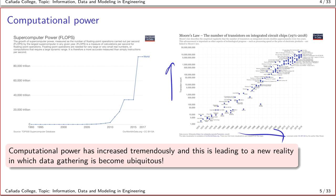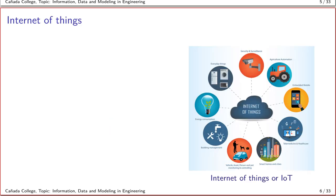The bottom line here is that computational power is increasing tremendously and this is leading to a new reality in which the ability to gather and process data is becoming ubiquitous. Pretty much every machine that an engineer is thinking about is now linked to be able to gather data and utilize that data.